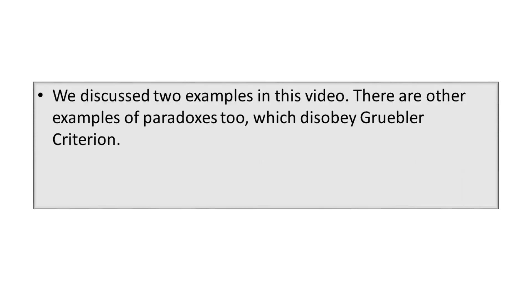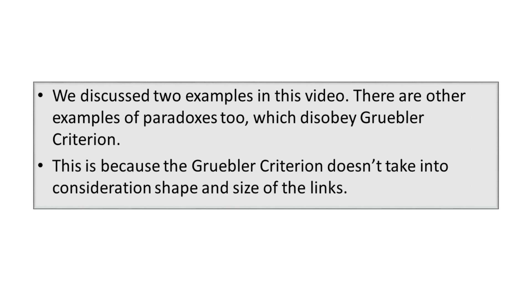We discussed two examples in this video. There are other examples of paradoxes too which disobey the Gruebler Criterion. This is because the Gruebler Criterion does not take into consideration the shape and size of the links, so it can produce misleading results in the face of unique geometric configurations. The designer needs to be alert to these possible inconsistencies.